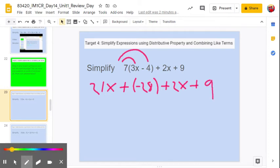All right, now we can begin to combine like terms. So 21x and plus 2x is going to be 23x.